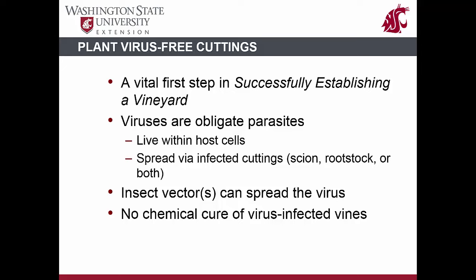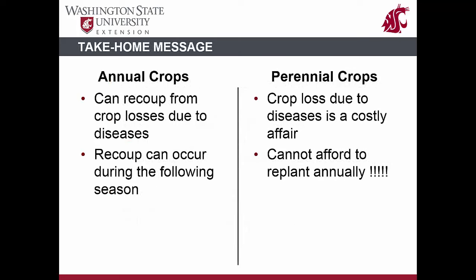Eventually, the virus can spread throughout a vineyard block, leading to diminished vine health and reduced fruit yield and quality. Unfortunately, virus diseases are not easy to control and there are no chemical treatments to eradicate the virus. The impact of virus diseases is cumulative and long-lasting in perennial crops compared to annual crops. If an annual crop like tomato is devastated by a virus disease, crop losses are for a single year, and with proper precautions new plants will perform well the following season.